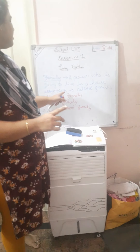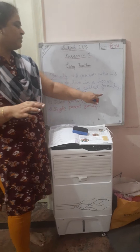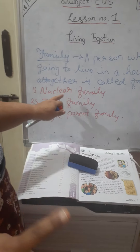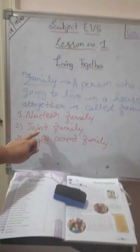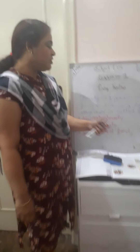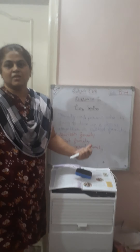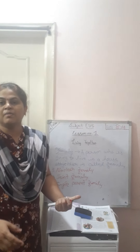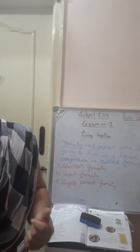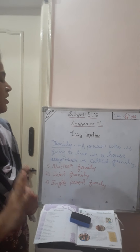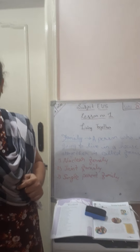So family is having three types. Three types of families are there. That is nuclear family, joint family, and single parent family. So nuclear family means here only parent and children are going to live in a home. That is called a nuclear family.